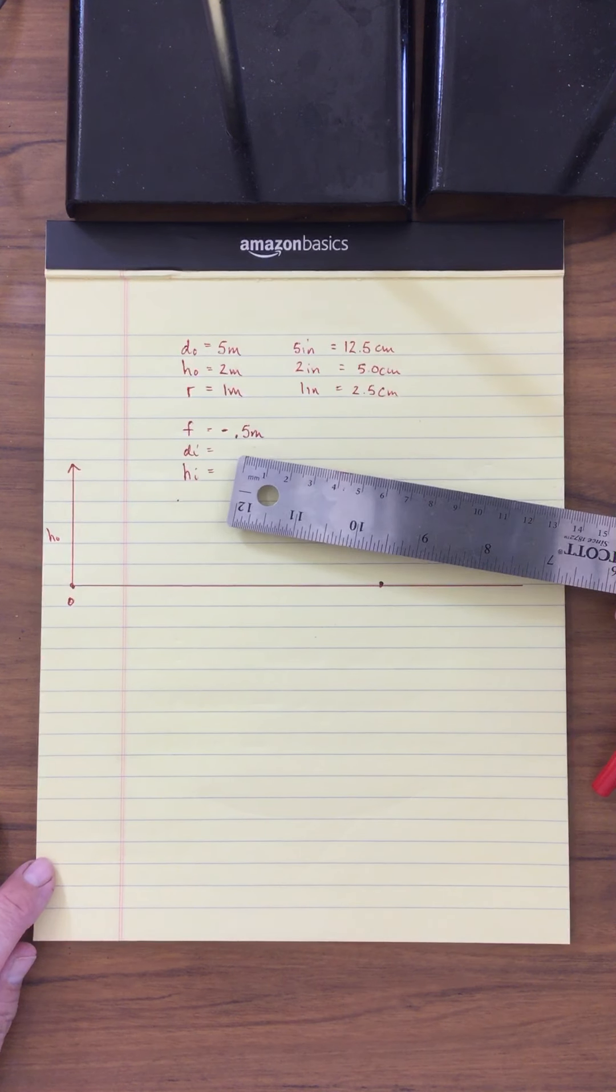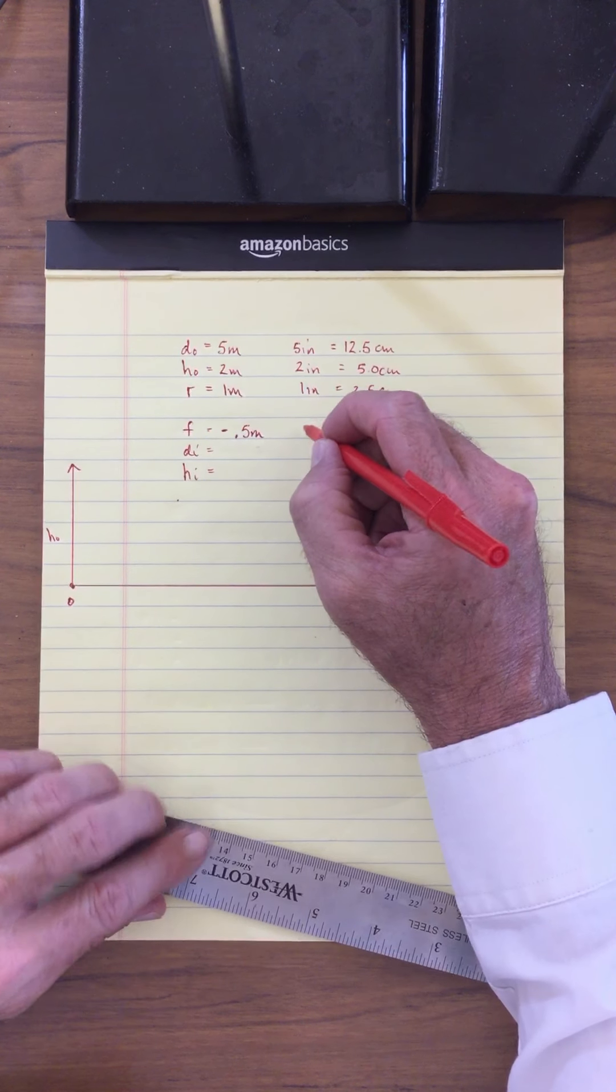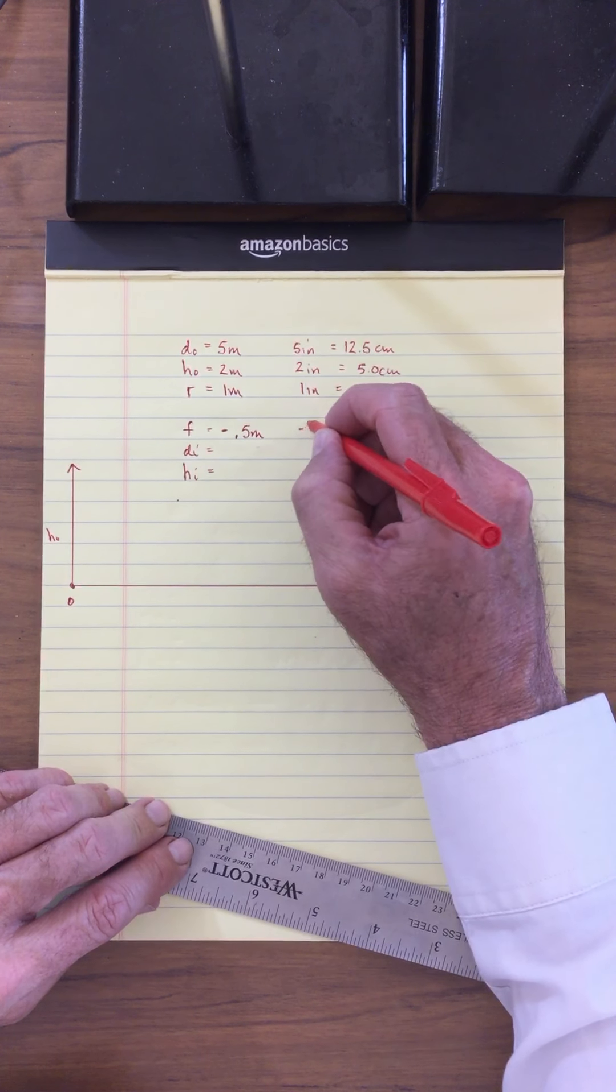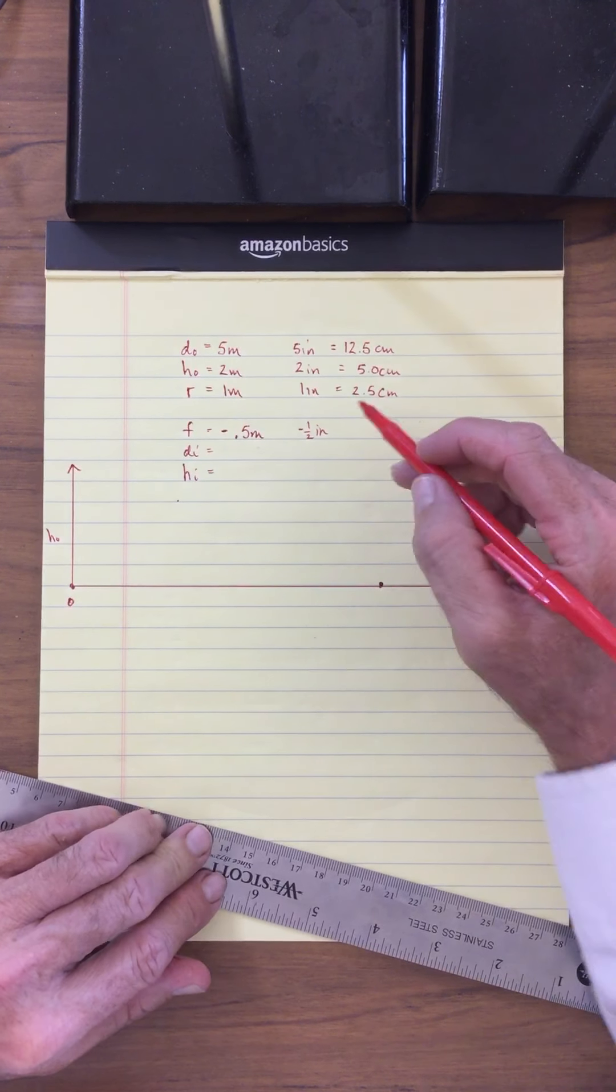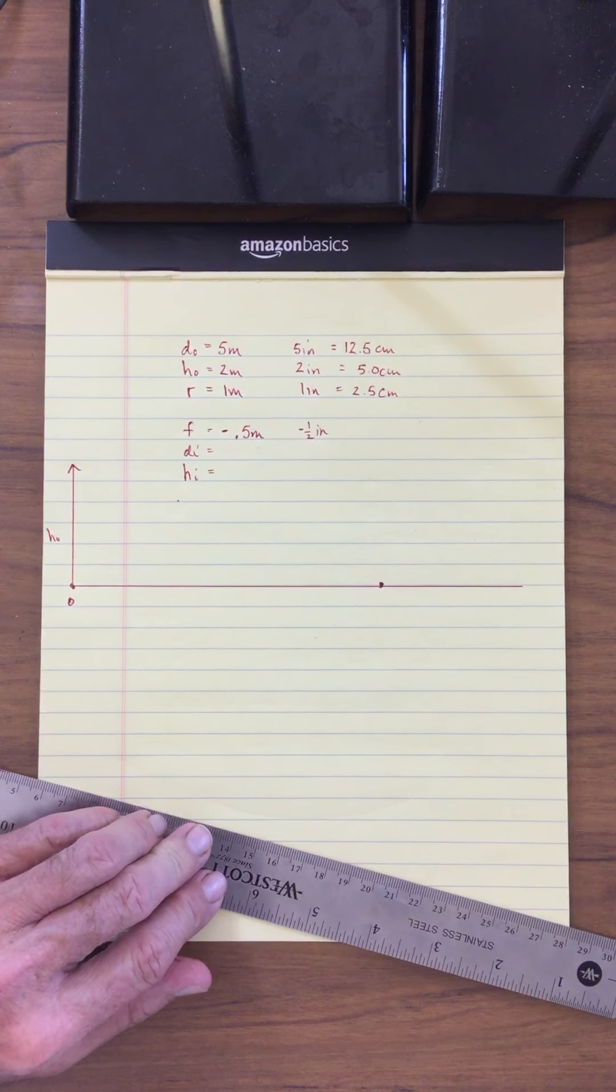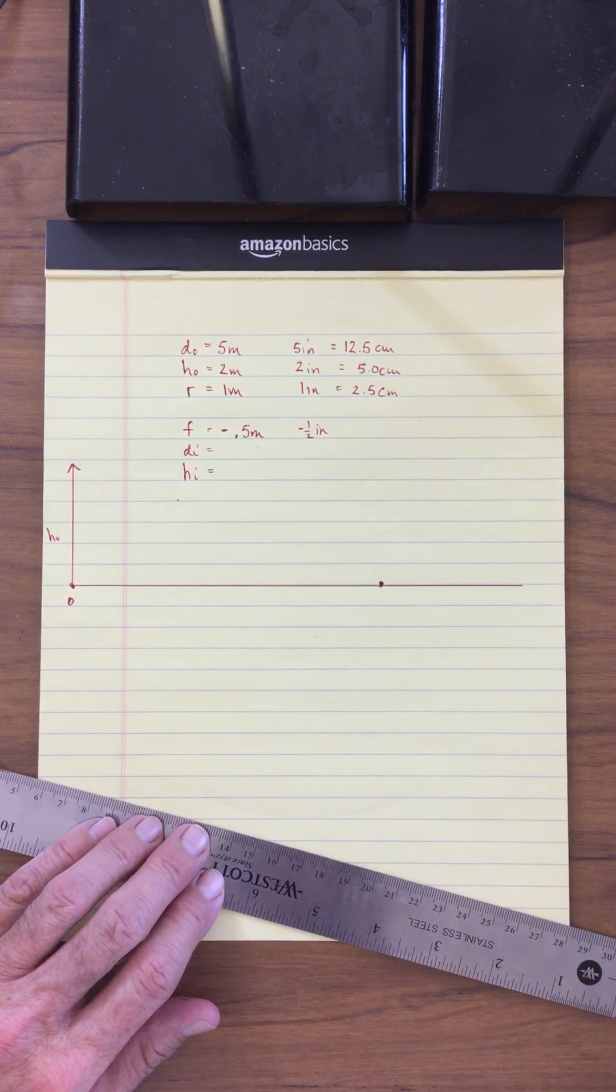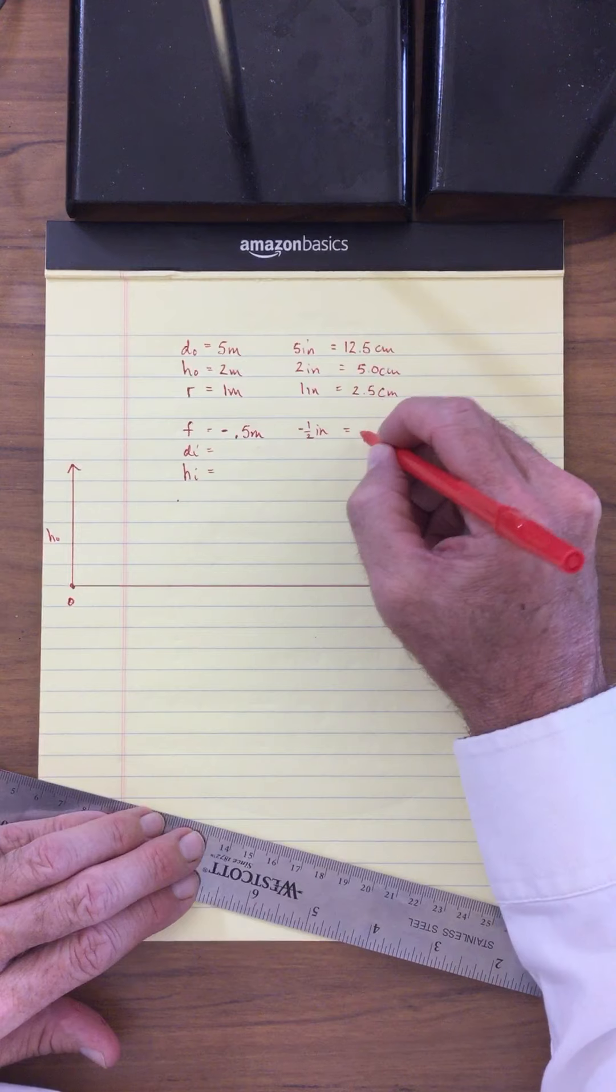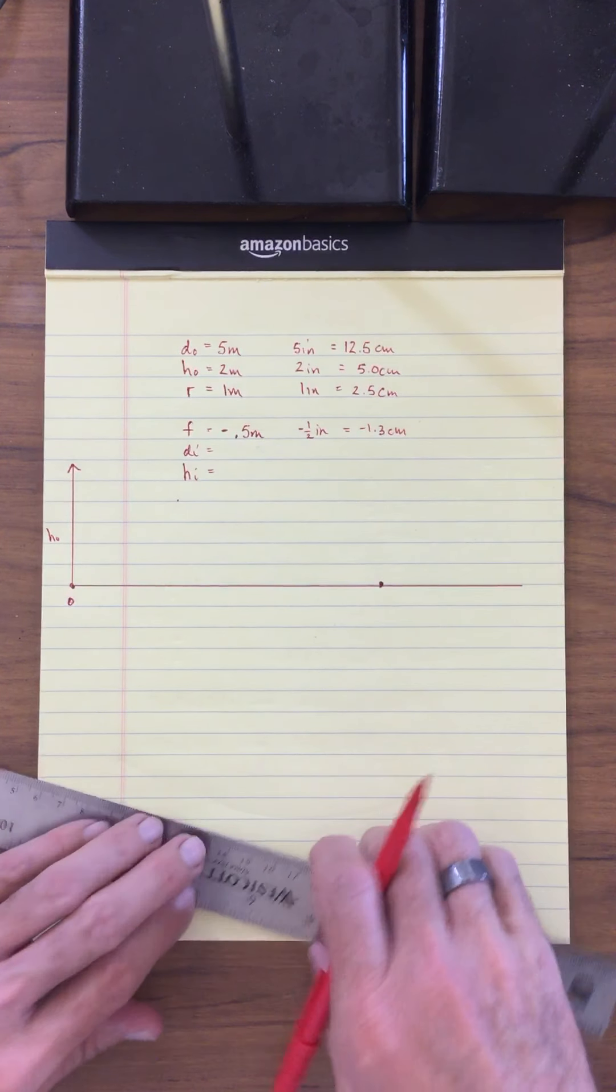Now my focal point is going to be half a meter, which means this is going to be minus a half of an inch, and half of 2.54 divided by 2 gives us closer to 1.3, minus 1.3 centimeters for the focal point.